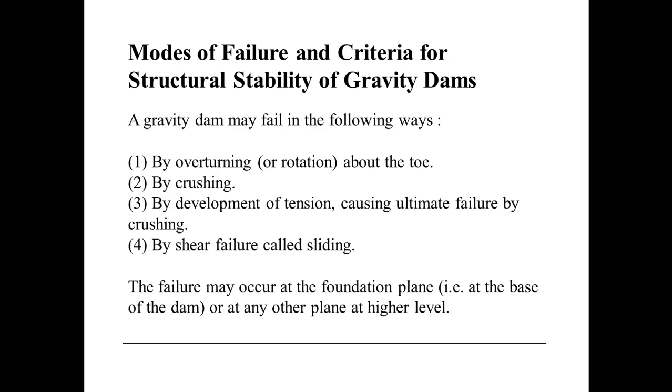A gravity dam may fail in the following ways. Number one, the dam may fail by overturning or rotation about the toe. Number two, the dam may fail by crushing. Number three, by development of tension causing ultimate failure by crushing.